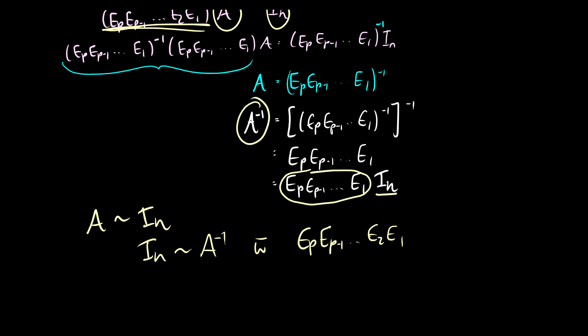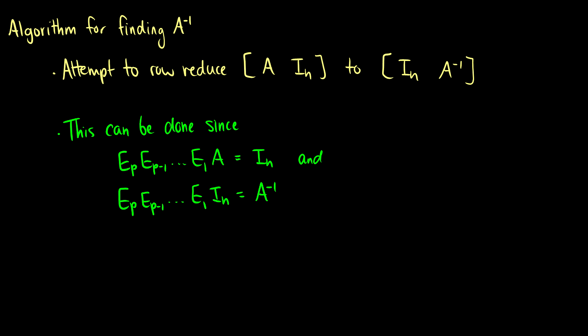So how do we use this? We have an algorithm for finding the inverse. What we do is we attempt to row reduce the augmented matrix containing A and the identity to the matrix containing the identity and the inverse. Essentially, A goes to the identity, and simultaneously if we do the same steps on the identity matrix, we will end up with the inverse. I know I've repeated the same thing a few times, just trying to drill this in, because on an exam this is one of those things you forget randomly.